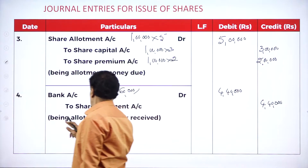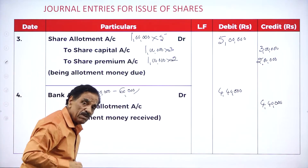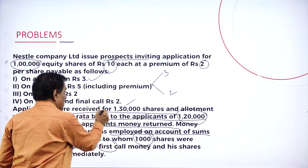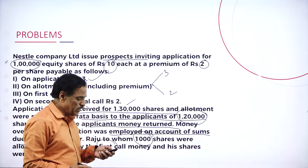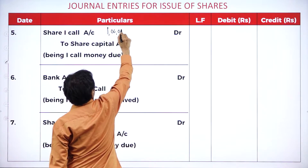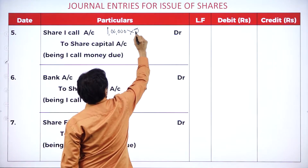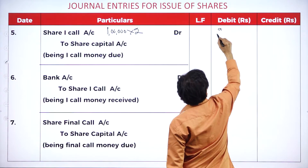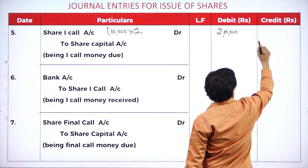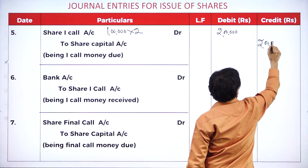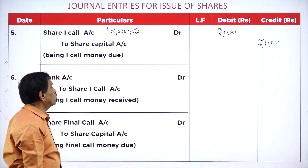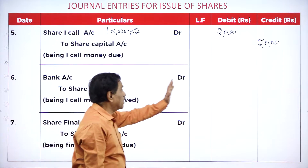Then we go to the first call due entry. First call money is rupees 2, final call also 2. Due entry: share first call account debit — 1 lakh into 2 = 2 lakh — to share capital account 2 lakh. This is the amount to be received. Now, who fails to pay? The first man holds 1,000 shares and fails to pay the first call money.